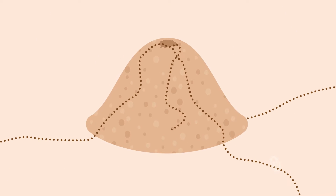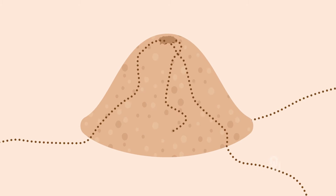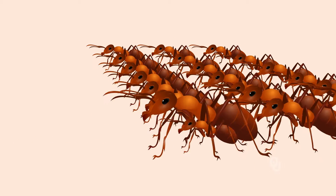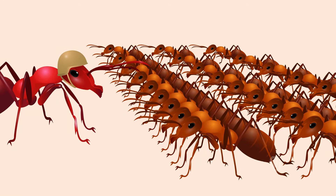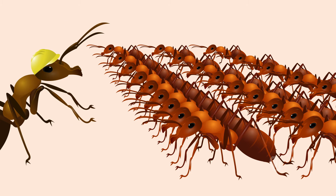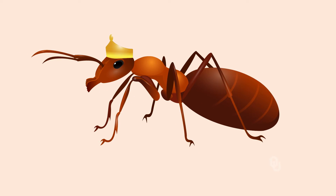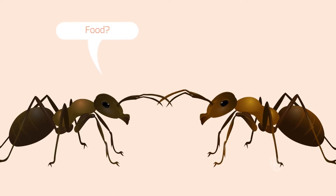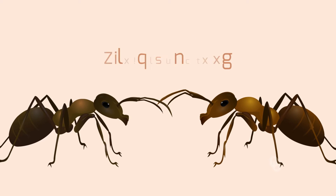The collective abilities of such animals — none of which grasp the big picture, but each of which contributes to the group's success — seem miraculous even to the biologists who know them best. Yet during the past few decades, researchers have come up with intriguing insights. One key to an ant colony, for example, is that no one is in charge. No generals command the ant warriors. No managers boss around the ant workers. The queen plays no role except to lay eggs. Even with half a million ants, a colony functions just fine with no management at all. It relies instead upon countless interactions between individuals, each following simple rules of thumb. The system is self-organizing.